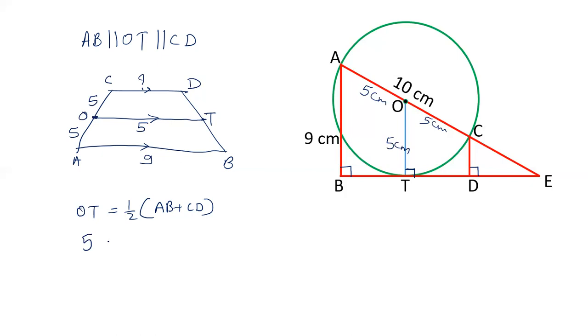So let's put the value. OT is 5, 1 by 2. AB is 9, CD. 5 times 2, 10 equals 9 plus CD. So the value of CD will be 10 minus 9. That is 1 cm. So the length of this line will be 1 cm.